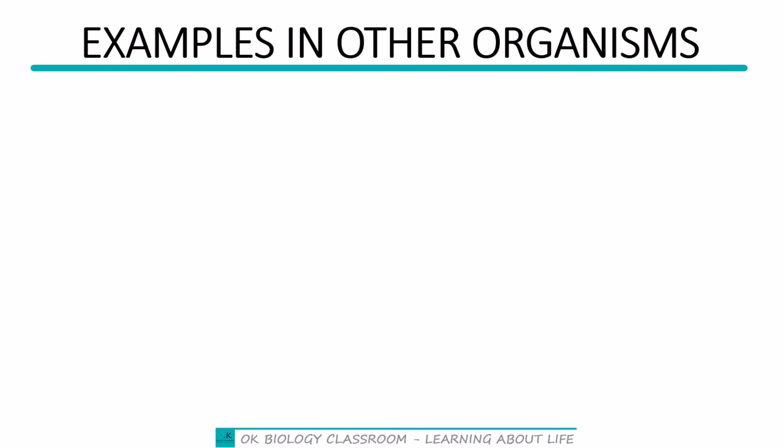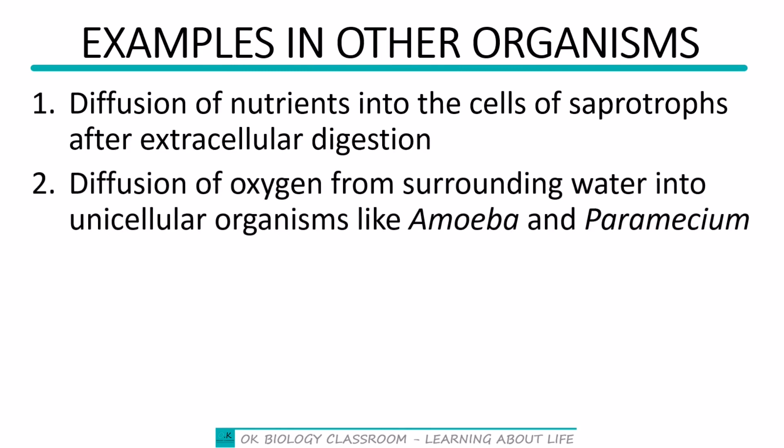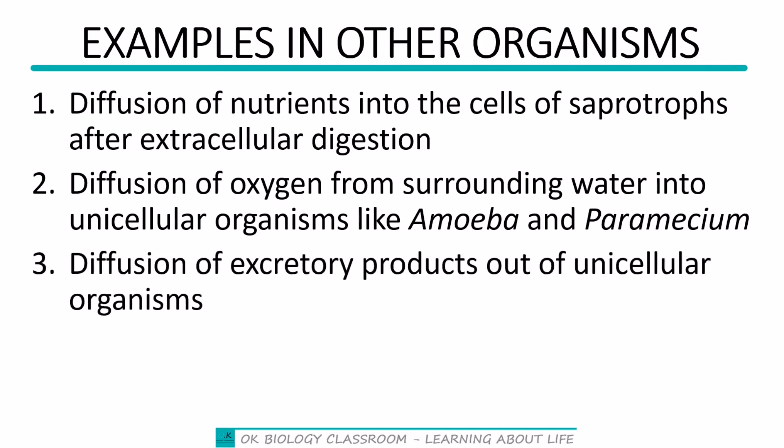Looking at other organisms: saprotrophs perform extracellular digestion, breaking food down on the outside, and then absorb the nutrients by diffusion. Also, diffusion of oxygen from surrounding water into unicellular organisms like amoeba and paramecium, and diffusion of excretory products out of such unicellular organisms.